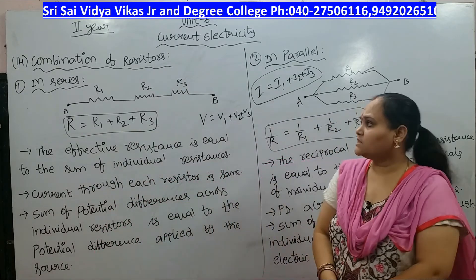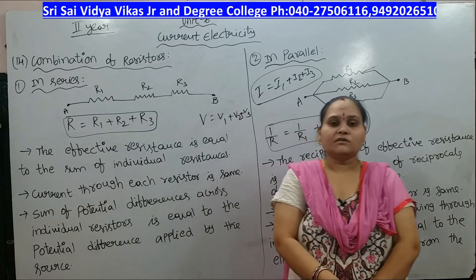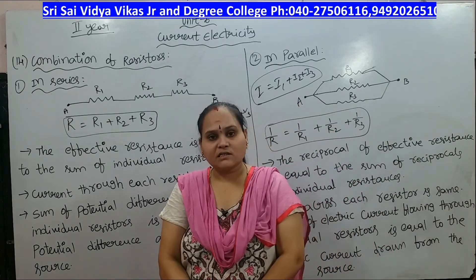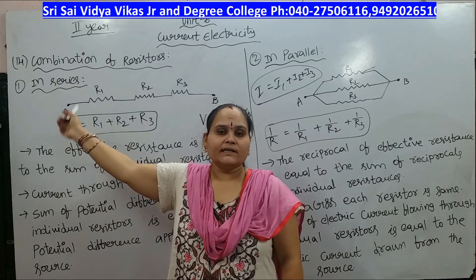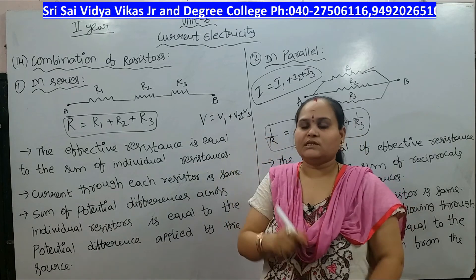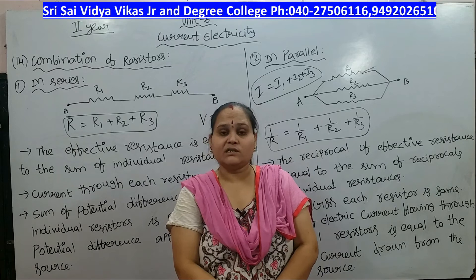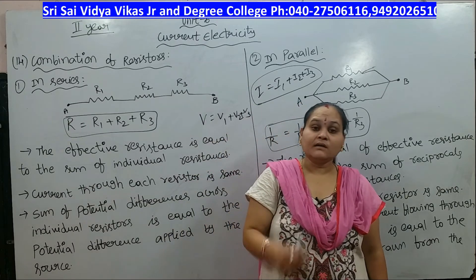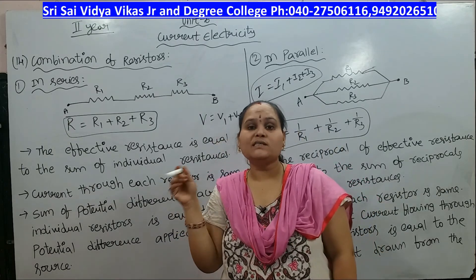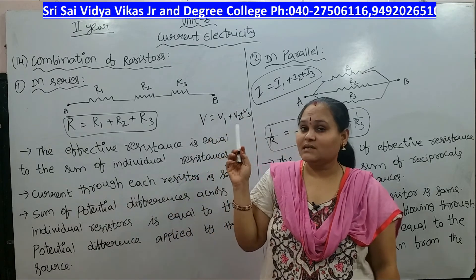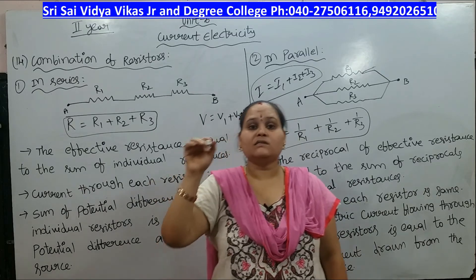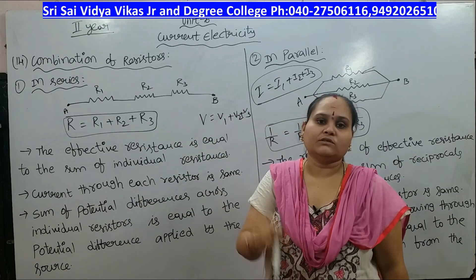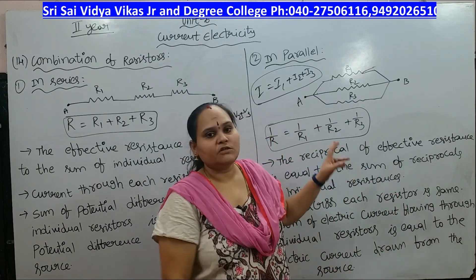To recap: we have two types of combinations — series and parallel. In series combination with resistors R1, R2, R3 between terminals A and B, the effective resistance R = R1 + R2 + R3. The current through each resistor is the same, and V = V1 + V2 + V3, where V is the source potential difference.